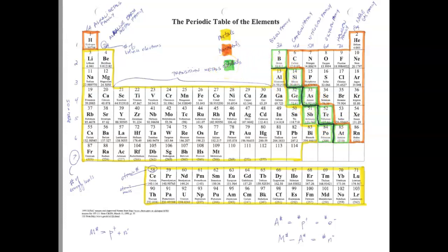Metalloids are elements that have the characteristics of both metals and non-metals. These include boron, silicon, germanium, arsenic, antimony, tellurium, polonium, and astatine — though depending on the textbook, astatine may or may not be recognized as a metalloid. These elements are what separates the periodic table into halves.